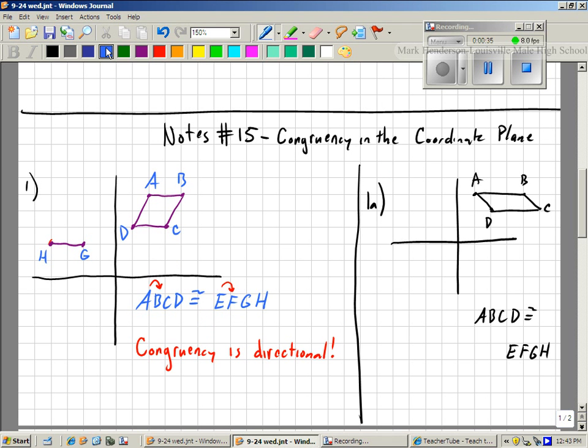So the second thing that you need to know is that it actually wraps around. So D goes back to A, just like it does up here. And that's where we're going to start. D goes to A the same way H goes to E.